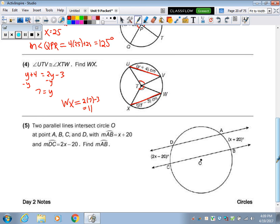And then the last theorem we learned, you've got parallel lines. It doesn't have the symbol on there for parallel, but it says the word parallel, so you know they're parallel. And if you have two parallel lines, then they cut the same arcs. 2x minus 20 equals x plus 20 minus x. Add 20. So x is 40, which makes arc AB 40 plus 20.